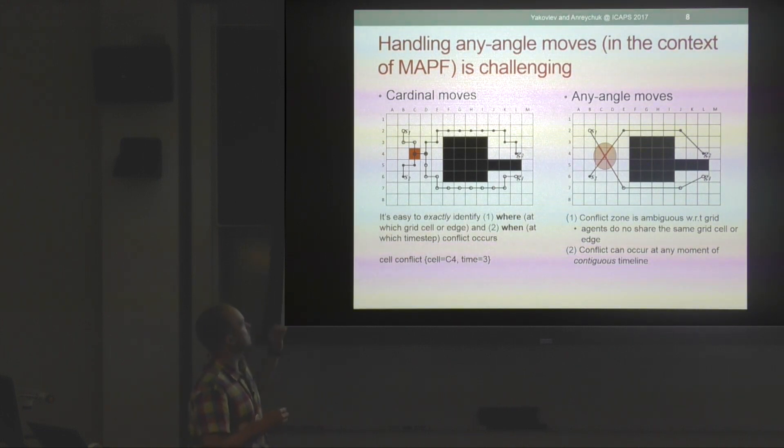We can always name the exact cell and the exact time point. But when we introduce any-angle moves, it happens so that the conflict zone becomes somewhat ambiguous with respect to the underlying grid model. We cannot just name a single grid cell where this conflict happens, and conflicts can now occur at any moment of the continuous timeline as well.